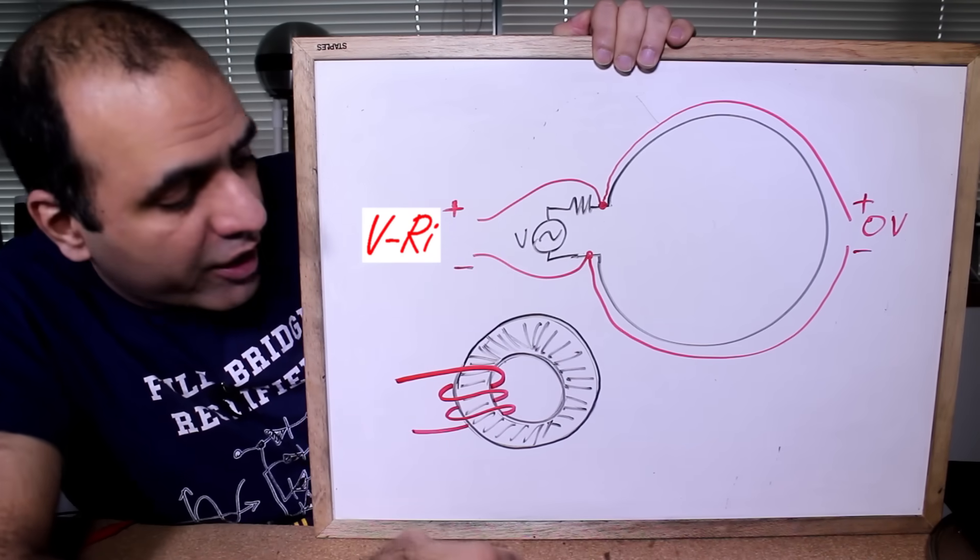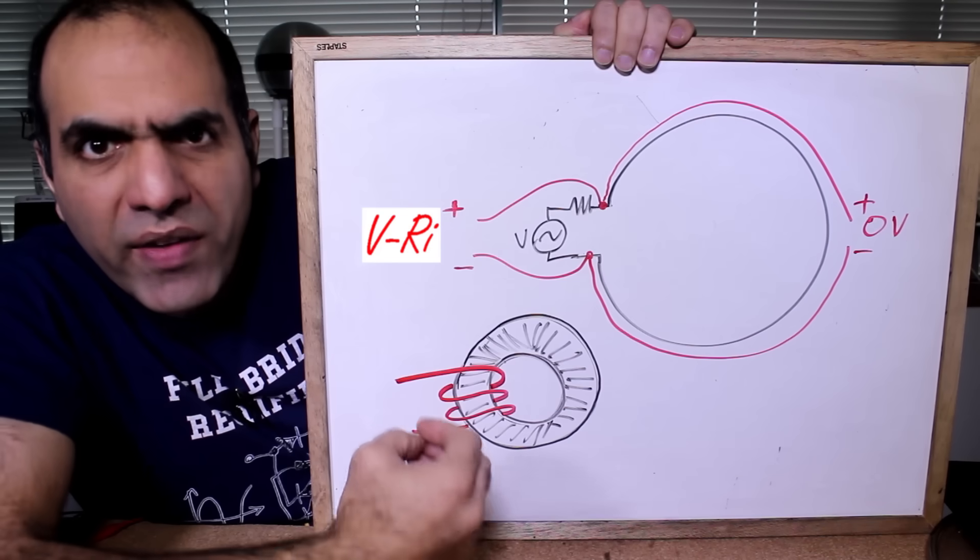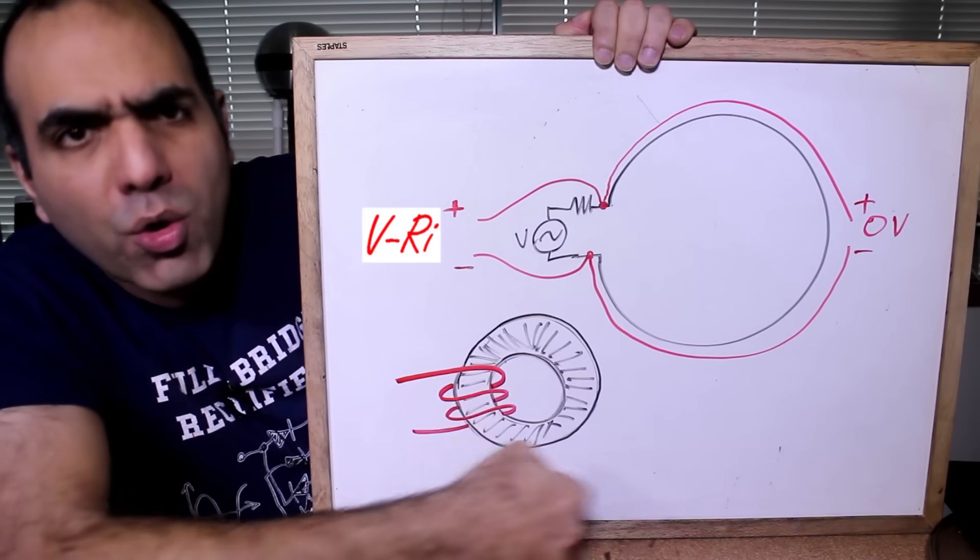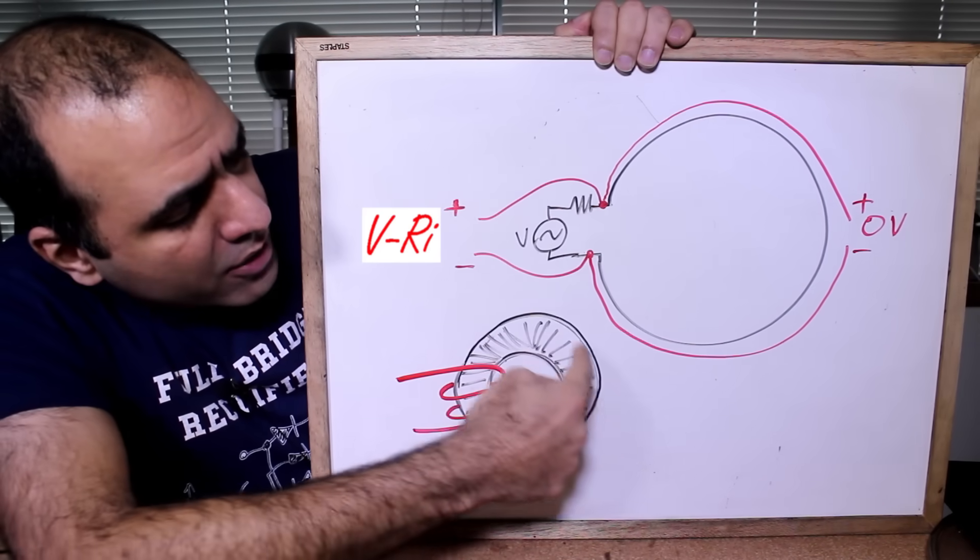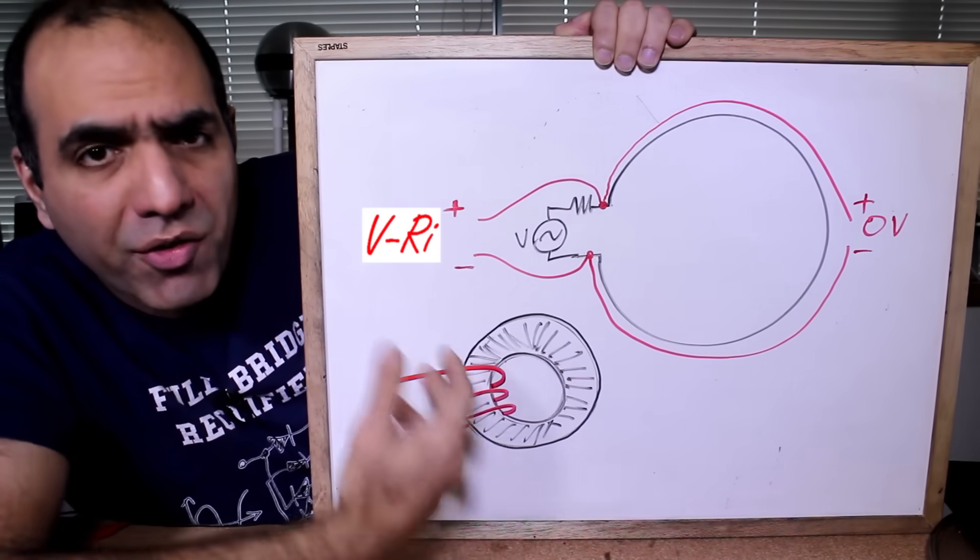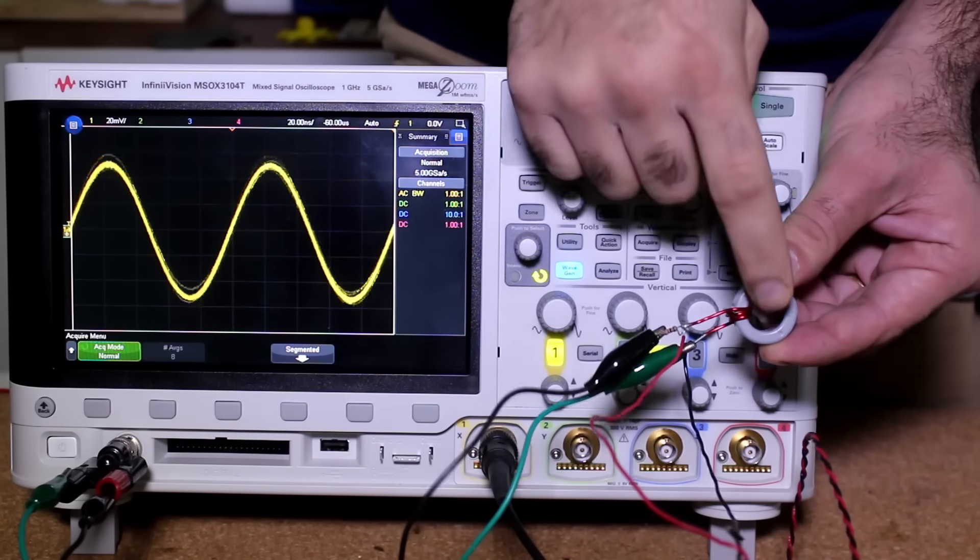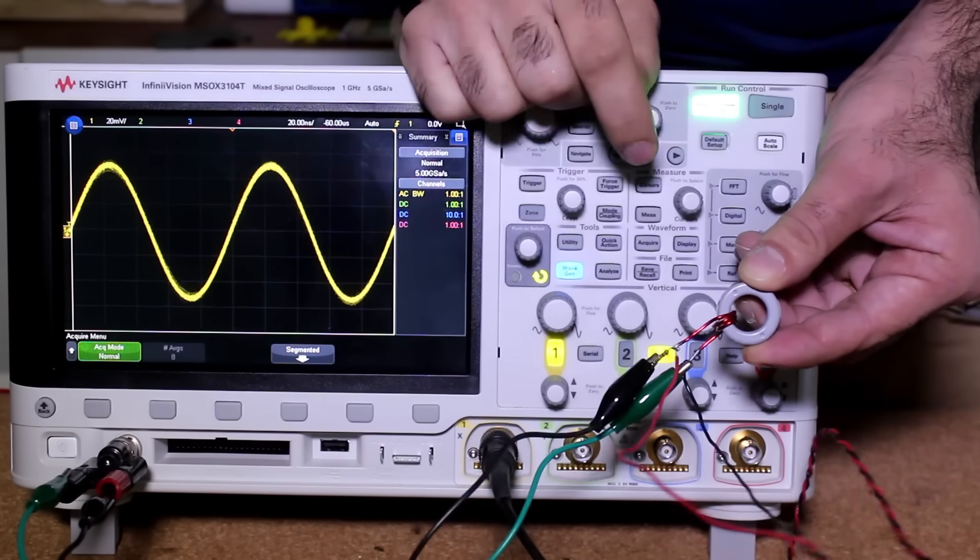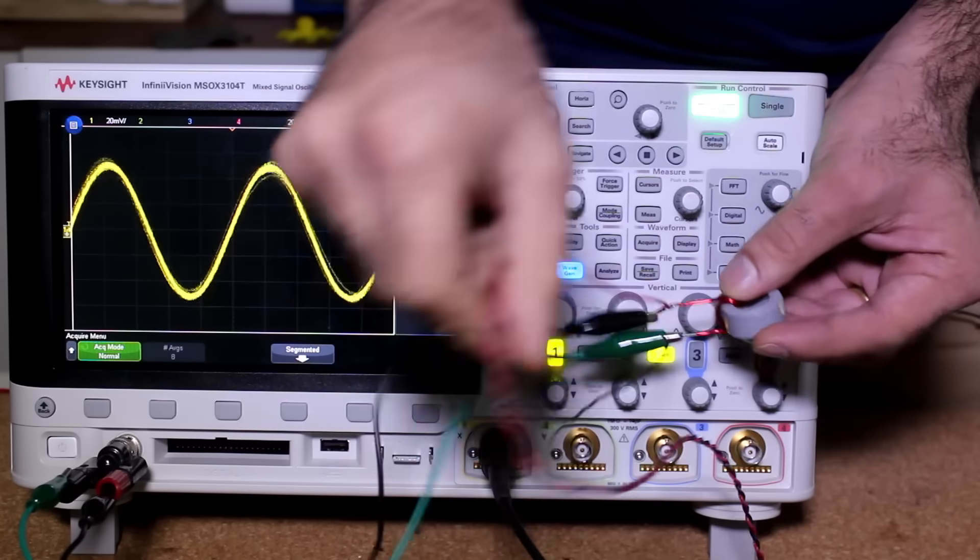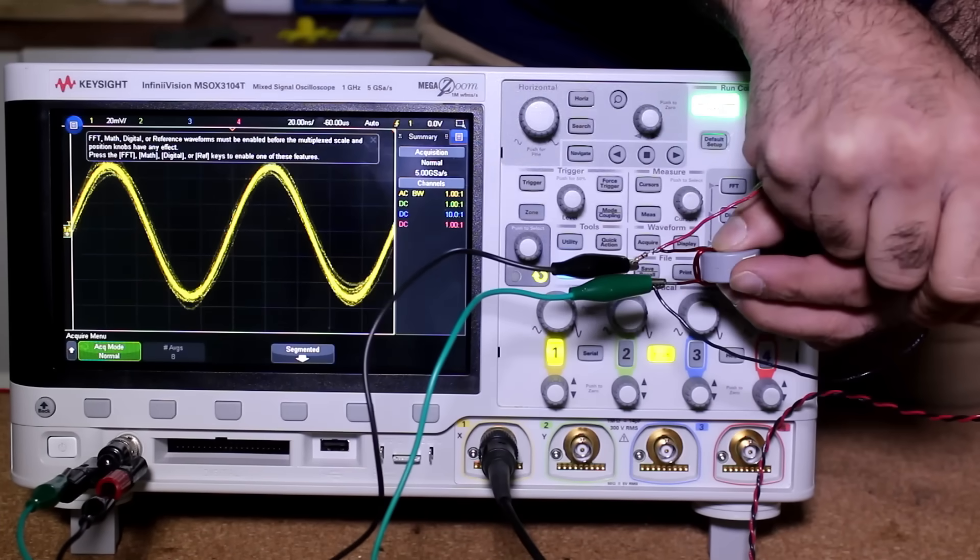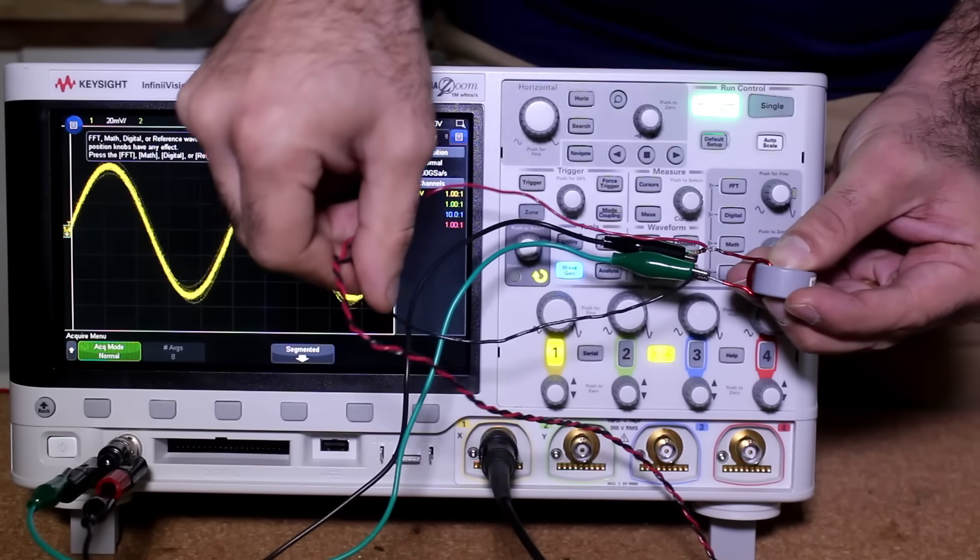On the other hand, if I create an inductor with contained fields, like winding around the toroid core, all the fields are contained in the core and my readings are not affected by where I probe. Here, I replaced my loop with a toroid and a few windings and you see, it doesn't make any difference if I probe on this side or the other side.